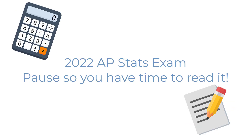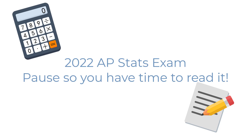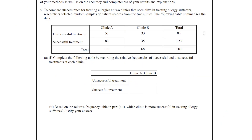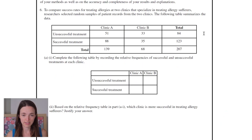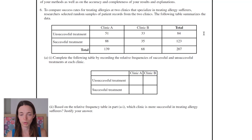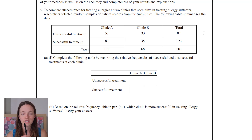Okay, so 2022. Part A1: complete the following table by recording the relative frequencies of successful and unsuccessful treatments at each clinic. Okay, relative frequencies. So it's like — of the whoever — is it of unsuccessful treatments who was at clinic A and B, or is it of clinic A who was unsuccessful and successful?